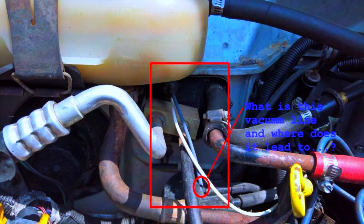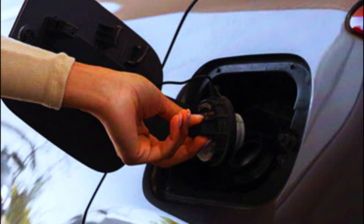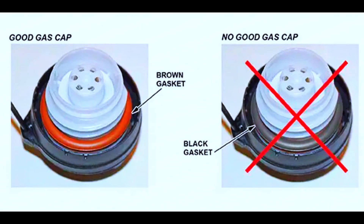Visual inspection: start with a visual inspection of the EVAP system. Check for any obvious signs of damage to the hoses or wiring that could be affecting the pressure sensor's performance. Check the gas cap: a loose or damaged gas cap can cause issues with the EVAP system's pressure, so ensure it's tightened or replace it if necessary.